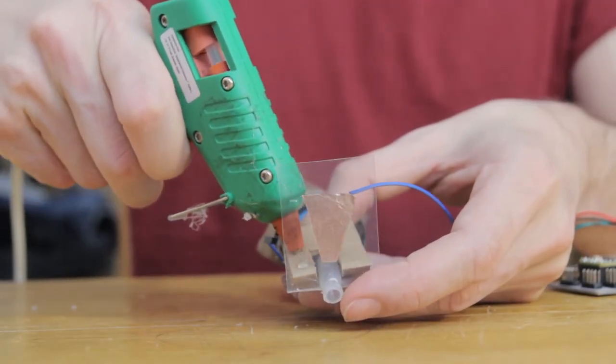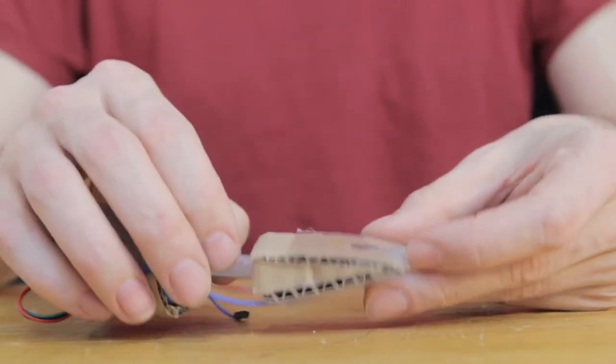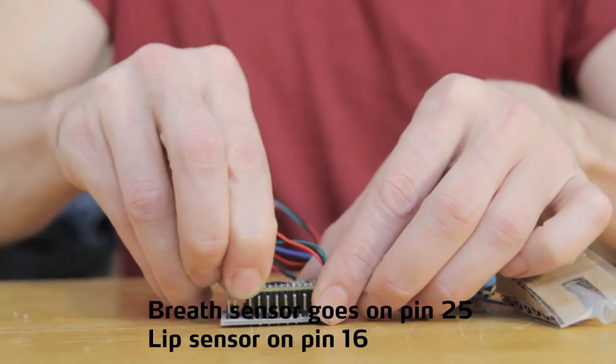Next I'll glue everything together. Apply the hot glue to the cardboard first. If you apply it to the plastic the heat will make it warp. Then we can plug in the new sensor.